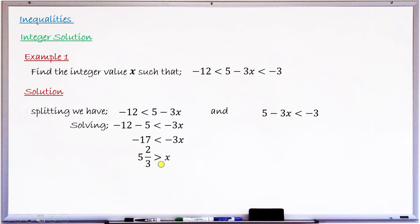Writing the integer solutions for this first inequality, since x must be less than 5 and 2 over 3, the integer values satisfying this are 5, 4, 3, 2, 1, 0, minus 1, minus 2, and so on — all integers below 5 and 2 over 3.